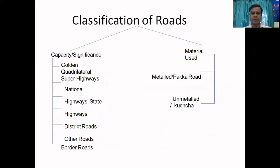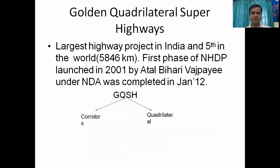Classification of roads: according to capacity or significance, we have the Golden Quadrilateral, Super Highways, National Highways, State Highways, District Roads, Border Roads, and other roads including village roads. According to material, we have kaccha (unmetalled) and pakka (metalled) roads.